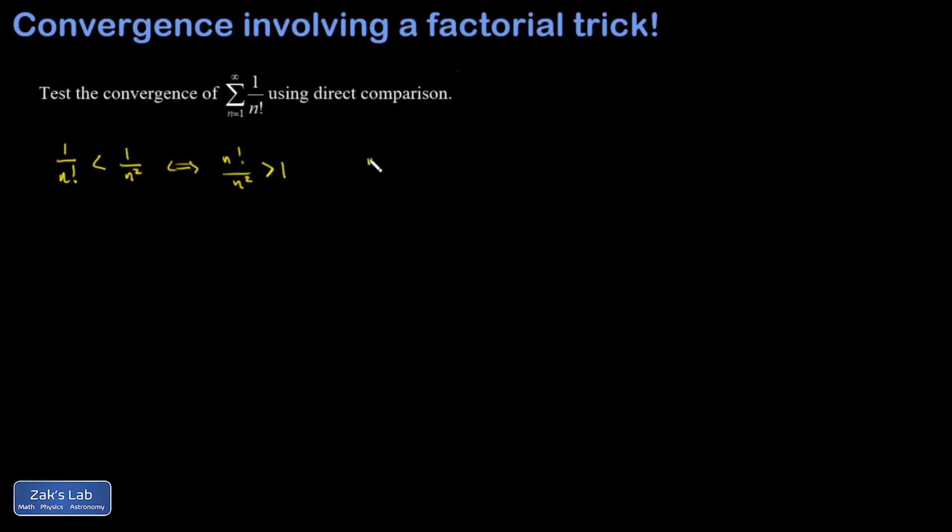So let's expand the numerator. And we're going to cancel one factor of n. And I'm going to rewrite this in a bit of a curious way.